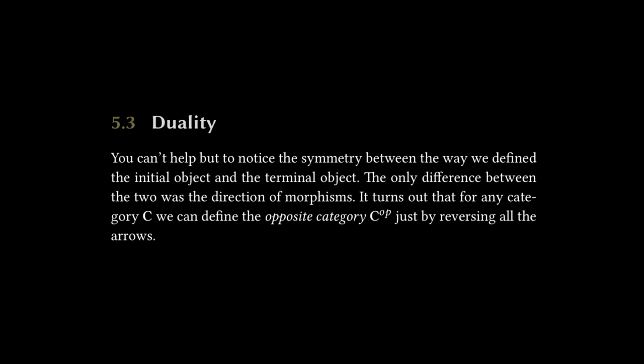But for naming reasons, they decided to go with initial and terminal. But for a lot of things, for instance, product, co-product, monad, co-monad, etc., the dual object is just prefixed with a co, which is good to know.